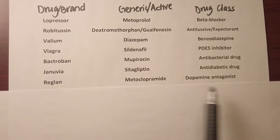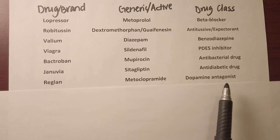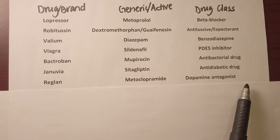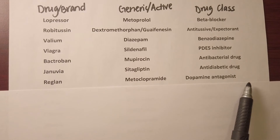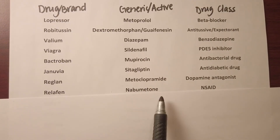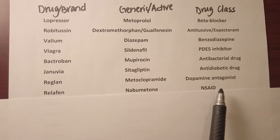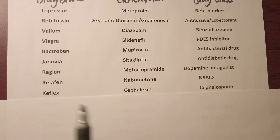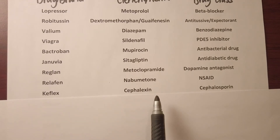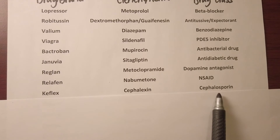— generic name metoclopramide, is a dopamine antagonist used to stimulate motility in the GI tract. Relafen is nabumetone, an NSAID used for pain relief. Keflex is cephalexin, an antibiotic that belongs to the cephalosporin class.